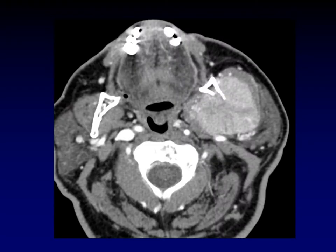Here's another mass of the masticator space. Look how the parapharyngeal fat has been displaced medially and a little bit posteriorly. Also note the destruction of the jaw itself — that's another good clue. This is a metastasis; it happens to be hepatocellular carcinoma, but of course any metastasis could have a similar appearance.